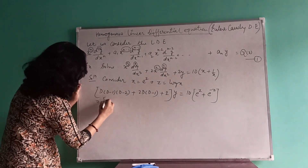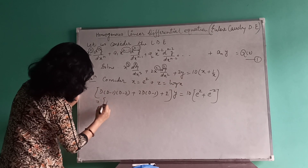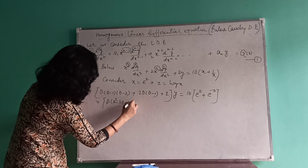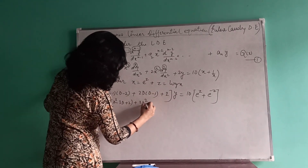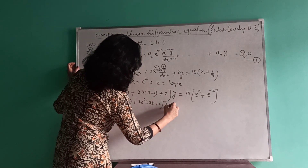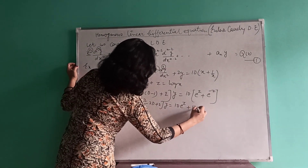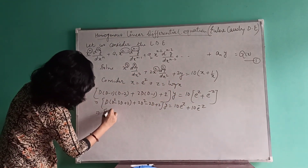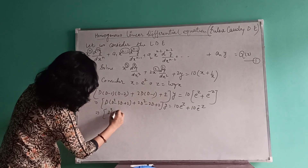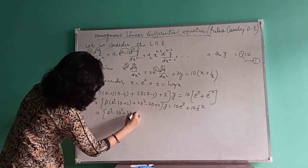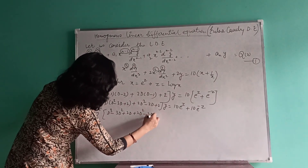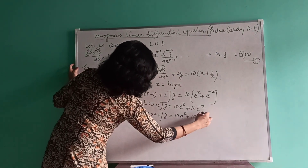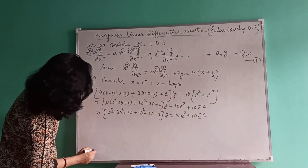Now simplify. Expanding D(D minus 1)(D minus 2) gives D(D² minus 3D plus 2), and expanding D(D minus 1) gives D² minus D. Adding the remaining terms, we get: D³ minus 3D² plus 2D, plus 2D² minus 2D, plus 2, times y equals 10e to the power z plus 10e to the power minus z.